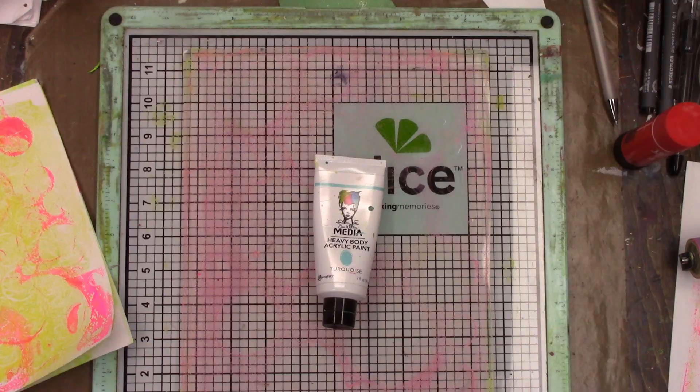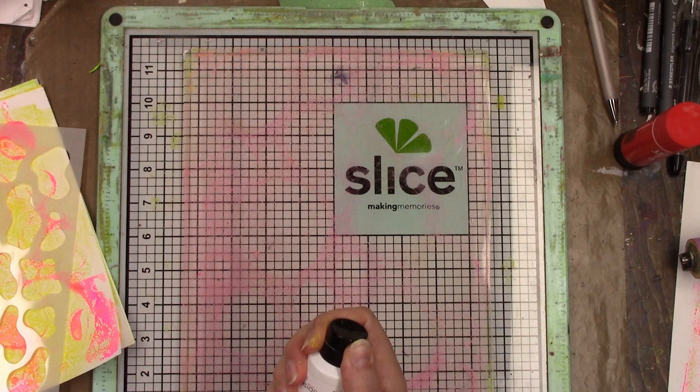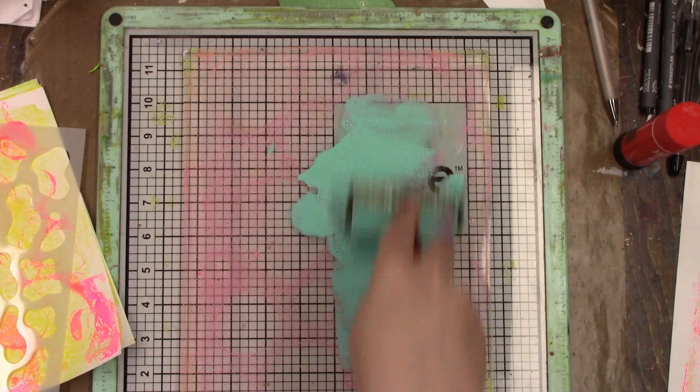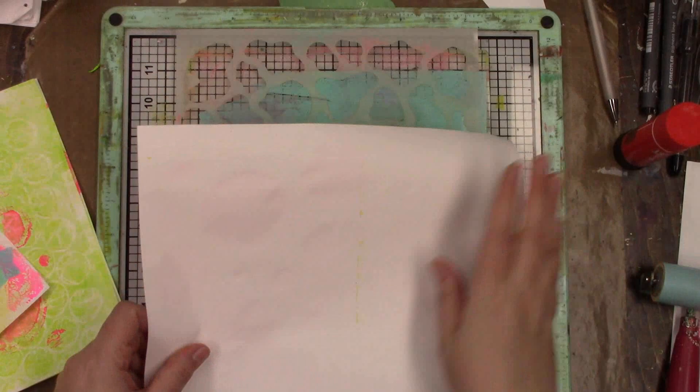That is our second layer. For the third layer, I'm going in with another dilutions stencil called giraffe and some Dina Wakley turquoise paint. Again, same technique, just getting it down on parts of the paper. It's all about just building the layers.